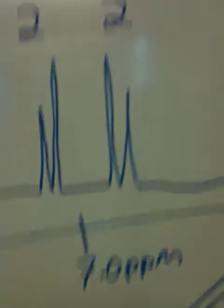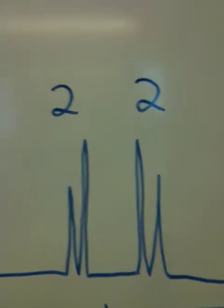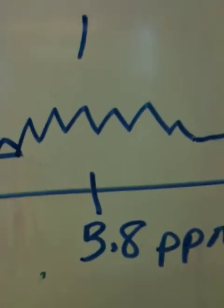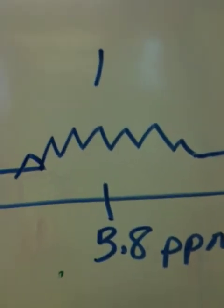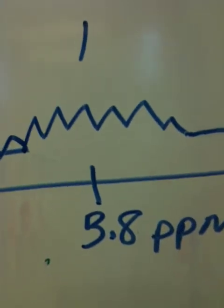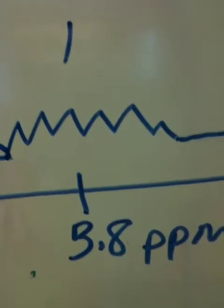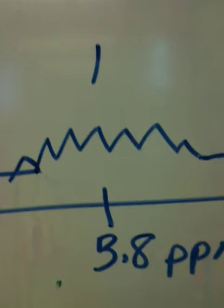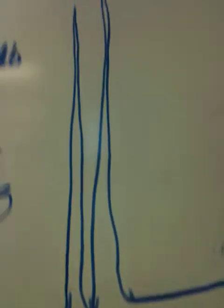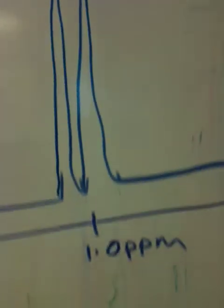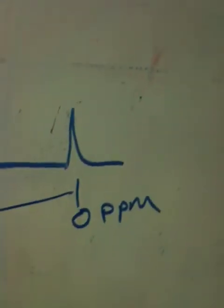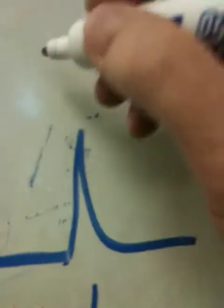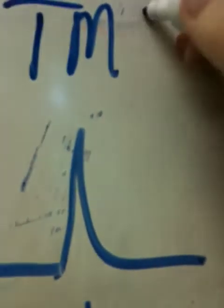Around 7 parts per million we have 2 doublets each integrating to 2. Around 3.8 parts per million we have a rather nasty looking multiplet — just call them multiplets, don't try to over-interpret them; it just means we have 1 near many. At 1 part per million we have a big doublet that has an area of 6. Then we have the reference compound, TMS, tetramethylsilane.